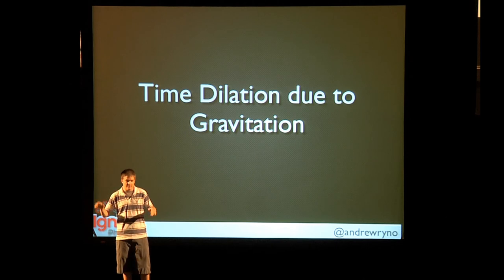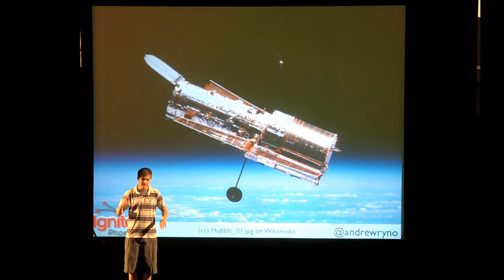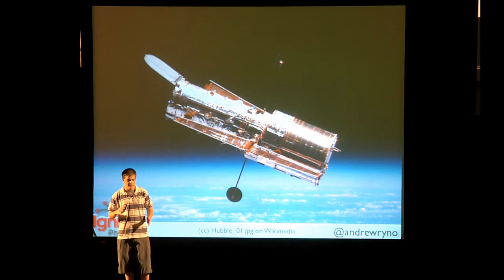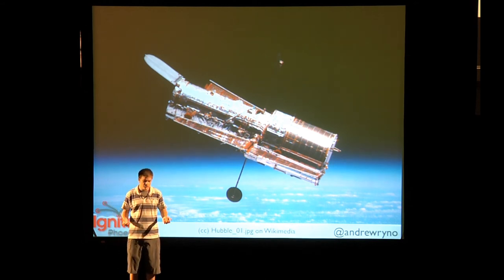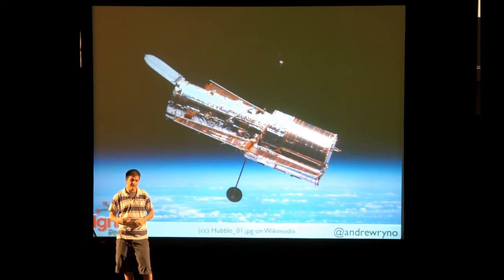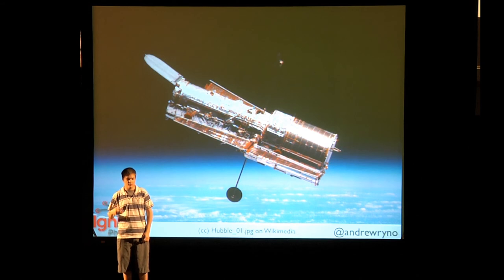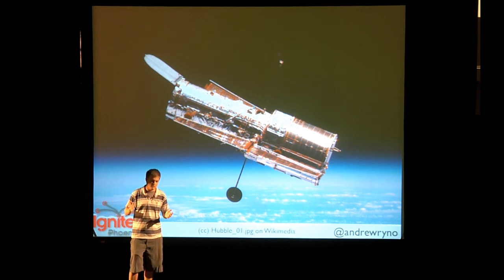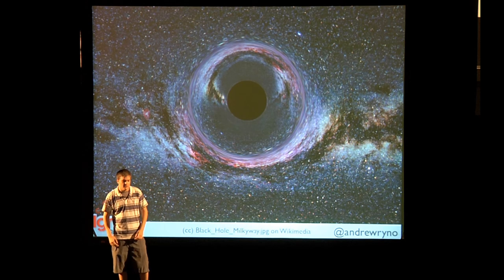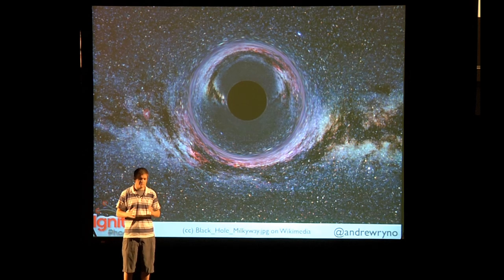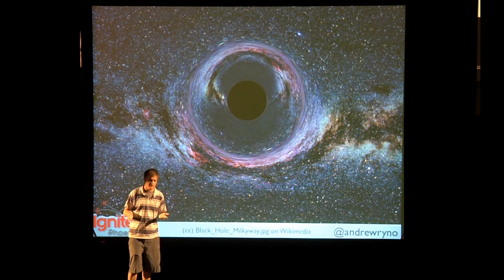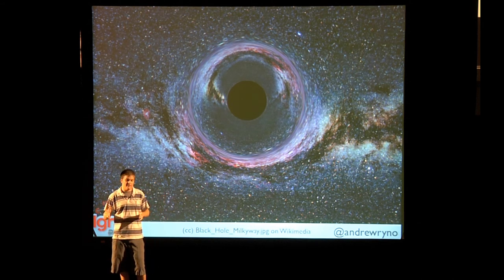Imagine the Earth is warping space-time, this trampoline-like thing, and you have things circling the Earth — satellites, the Hubble, GPS satellites — they all experience time differently than we do on Earth. GPS satellites constantly have to get their clocks re-timed so no one gets lost. Black holes warp space-time much more than the Earth does. There's a point before you get pulled in where time is virtually at a standstill — that's called the event horizon.